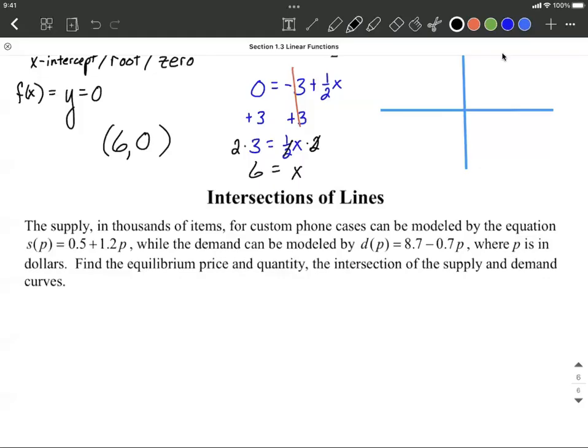Okay, finding the intersection of lines. So what we're given on this one is we're given a supply function and we're given a demand function. We want to figure out where do these intersect, find the equilibrium price and quantity, basically the intersection between these two lines.